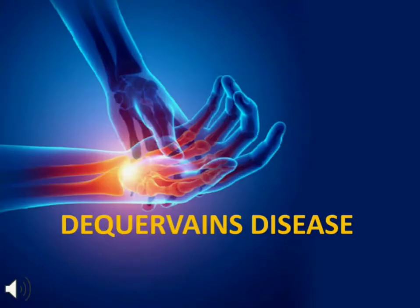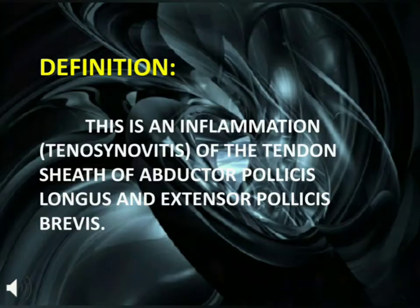De Quervain's disease. Definition: This is an inflammation of the tendon sheath of abductor pollicis longus and extensor pollicis brevis.